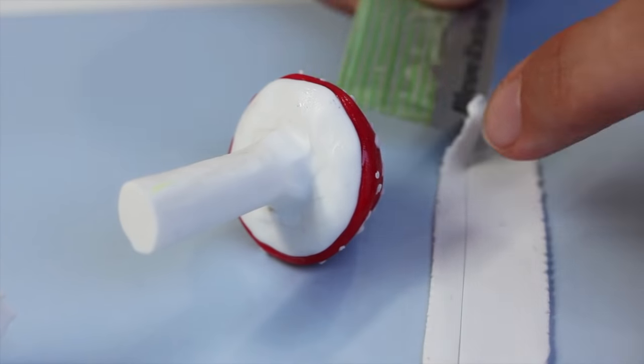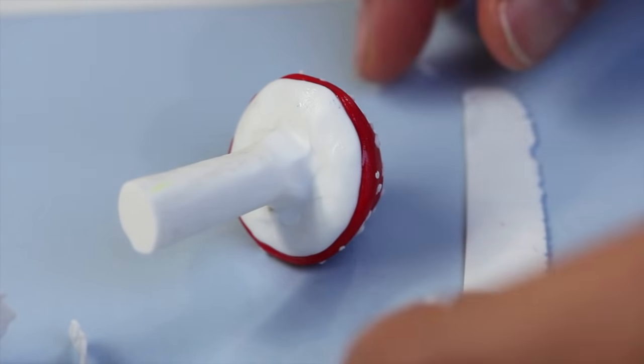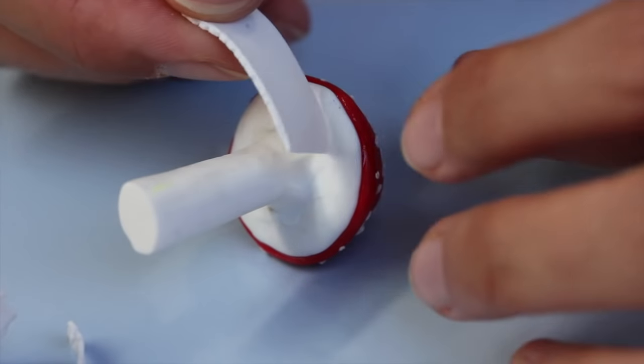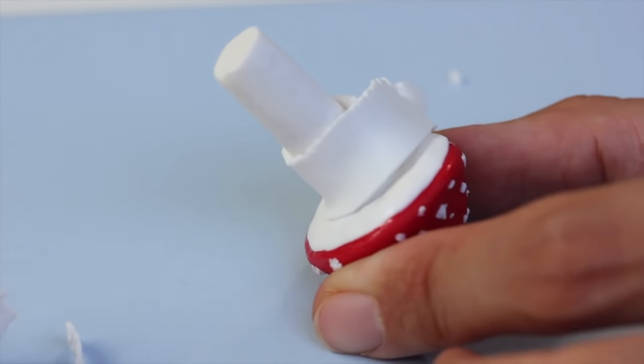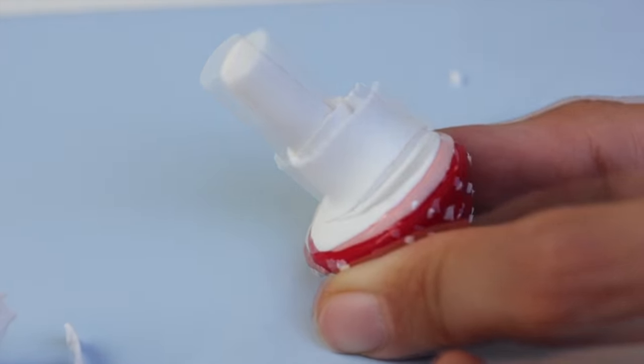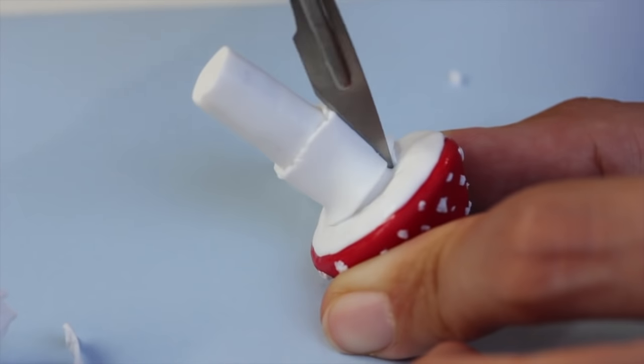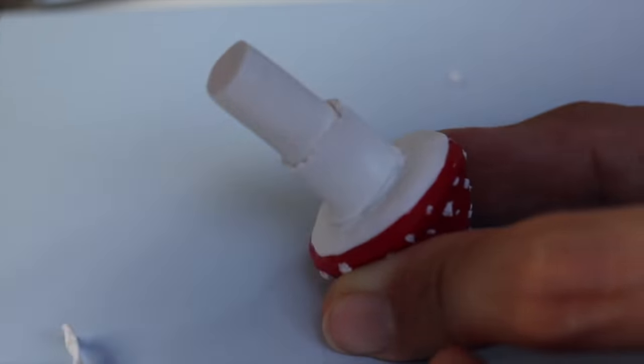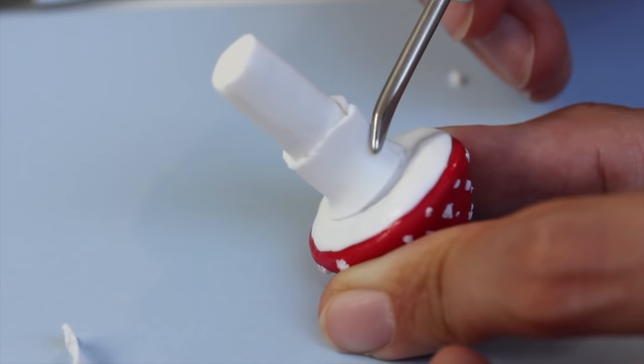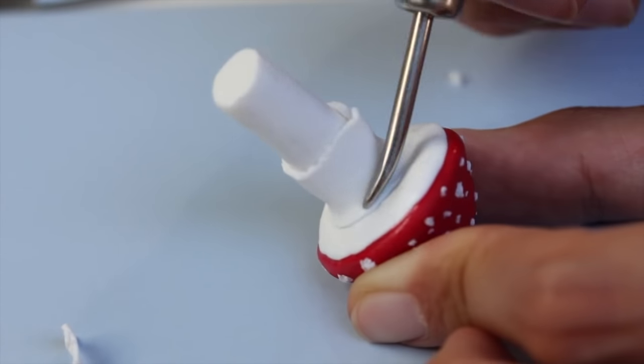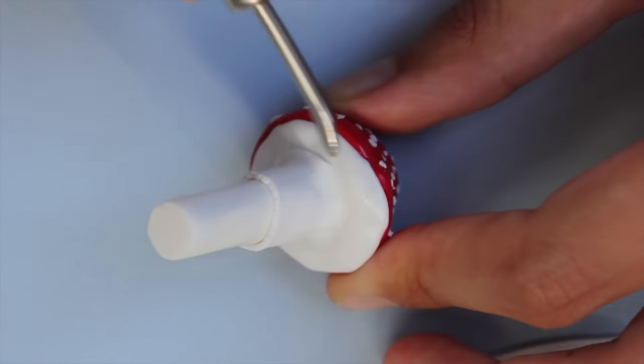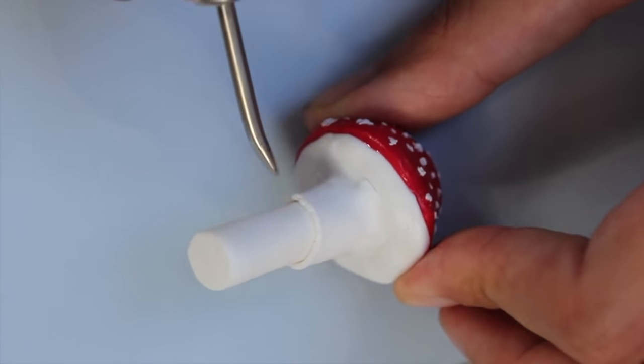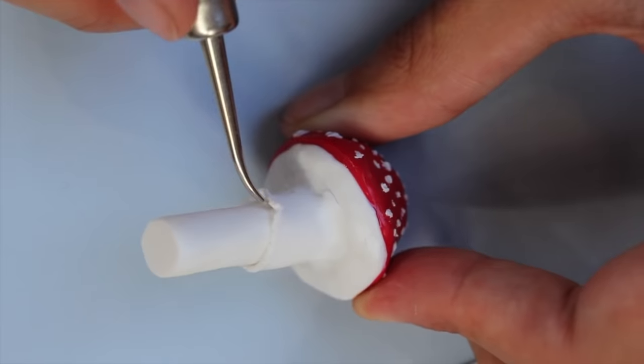And then we are going to add a sort of skirt just above the stem. You just cut out a piece of white clay. One side of the strip is a little bit fringy and that is on purpose so it looks more organic. And then again, smooth it all out so it sticks all nicely together.